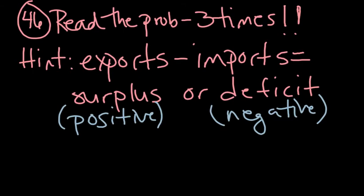Number 46. Read the problem at least three times to make sure you understand what it's talking about. Read, read, read. Here's your hint. Exports minus imports equals either a surplus or a deficit. Surplus is a positive number. A deficit is a negative number.